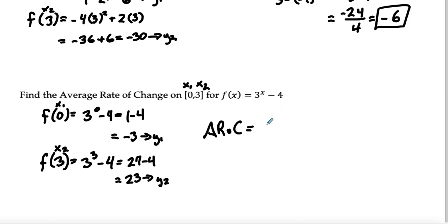y2 minus y1 is going to be 23 minus a negative 3. And that is going to be over 3 minus 0. So that's going to give me 26, actually. 26 over 3.